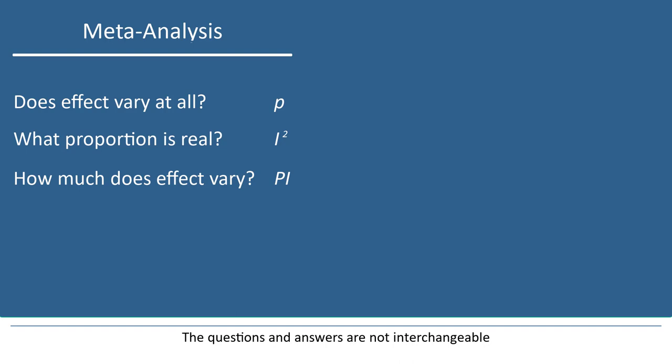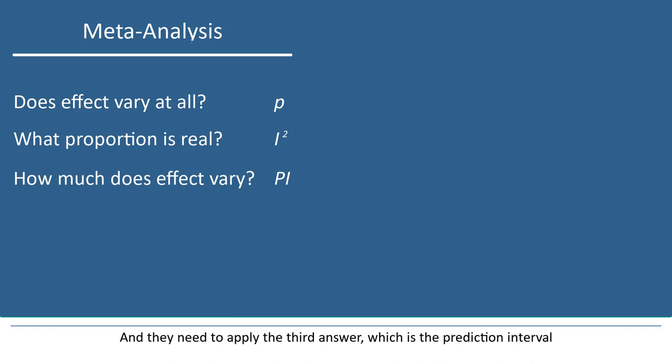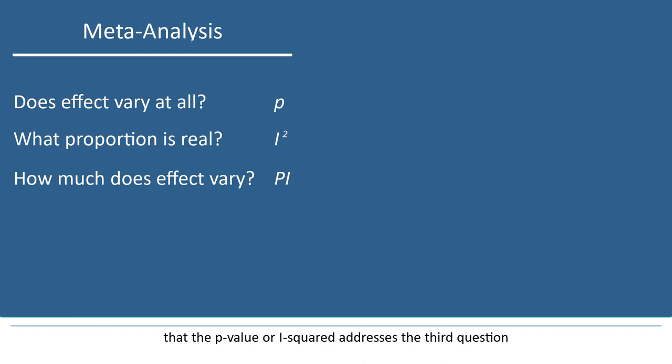In general, when researchers ask whether the effects are heterogeneous, they intend to ask the third question, and they need to apply the third answer, which is the prediction interval. The problem we see in the literature is that researchers sometimes think that the p-value or I-squared addresses the third question — they assume that the p-value or I-squared tells us how much the effect size varies, and this is incorrect.